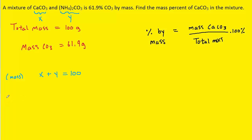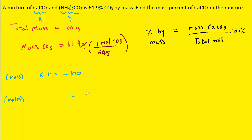We're also going to develop a moles equation. On the right-hand side, we'll figure out the moles of carbonate. We know the mass is 61.9 grams, and using the periodic table we can look up the molar mass of carbonate, which is about 60 grams per mole. Setting up this conversion, the grams cancel and we get about 1.032 moles of carbonate.